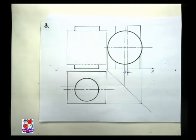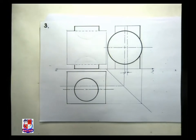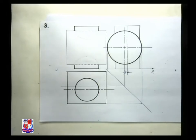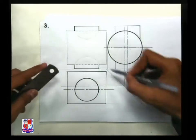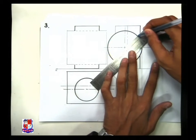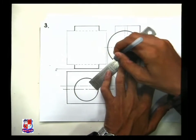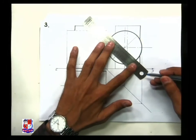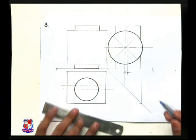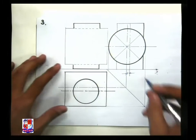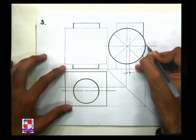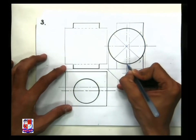Now, how to find out the other points — the points of intersection of this solid? For that, let us divide this solid, or the penetrating cylinder, into equal number of parts. Say we have divided into 8 equal parts like this, with 45-degree angle lines drawn. We can name the points: point number 1, point number 2, point number 3, 4, 5.